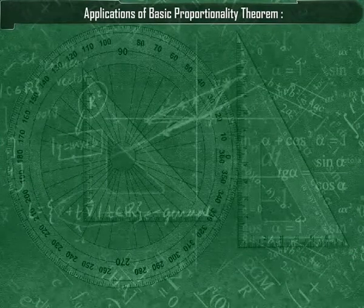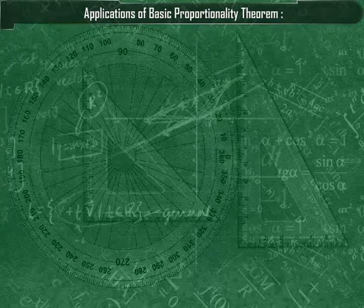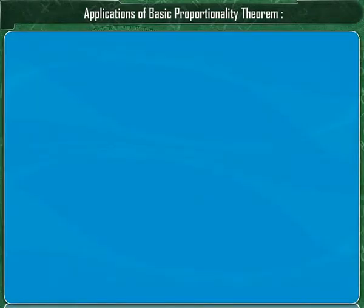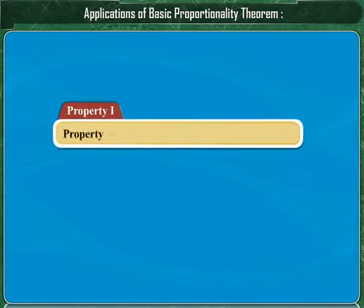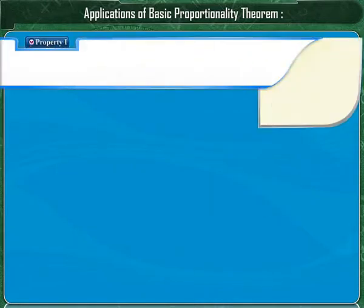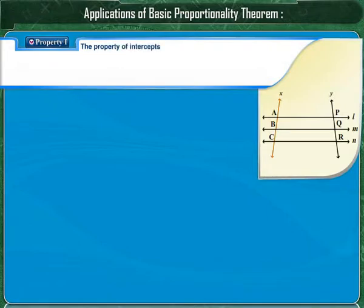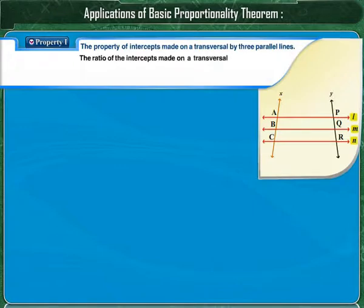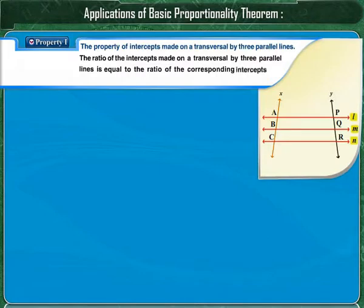Applications of the basic proportionality theorem. We will learn two properties based on BPT. The first is about intercepts made by three parallel lines, and the second is about the angle bisector of a triangle. The property of intercepts states: the ratio of the intercepts made on a transversal by three parallel lines is equal to the ratio of the corresponding intercepts made on any other transversal by the same parallel lines.